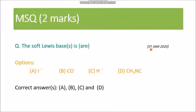Now move on to MSQ. MSQ means multiple select questions. The type of question is here. Again, IIT JAM 2020 question. The soft Lewis bases or base is or are: here iodide, carbon monoxide, hydride and methyl isocyanide. And the answer, all the four answers are correct because all of them are soft Lewis bases. So you have to click on all the four boxes A, B, C, and D.